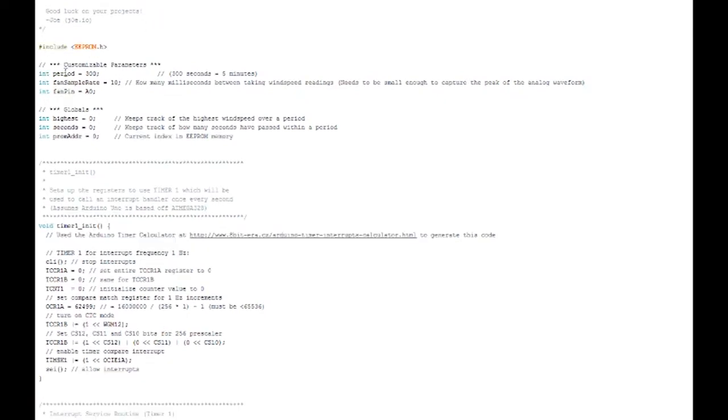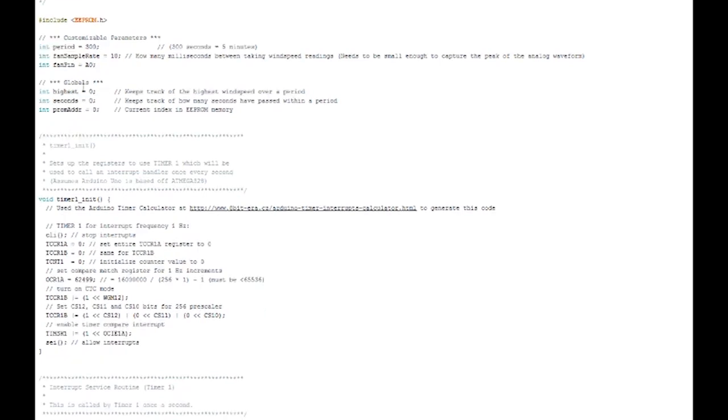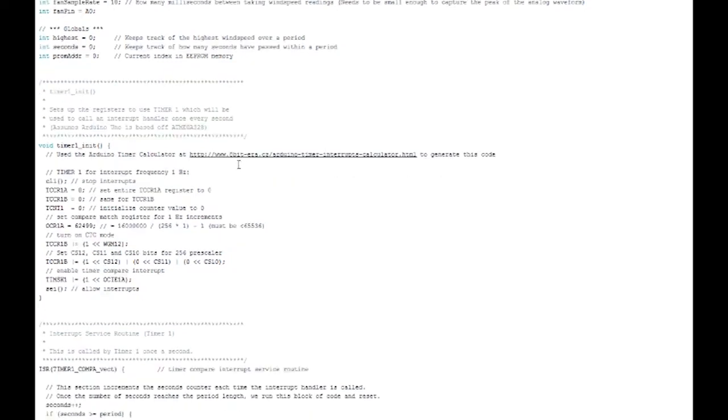And when the interrupt gets called, it takes whatever that highest reading was and stores it in the EEPROM memory. So starting off here, we've got the EEPROM. We include that. We have our customizable parameters. I've got the period time set up for 300 seconds, which equates to five minutes. The fan sample rate is 10. That's about 10 times a second, which seemed to work pretty well on the demonstration we did earlier. And for the fan pin, I'm using analog 0, A0. These are the global variables. This is going to store whatever the highest wind speed was over that period, the seconds or how many seconds that have accumulated within that period. That's how we know when to reset the period. And the PROM address is just our index into the EEPROM array where we're storing. If you don't know what EEPROM is, EEPROM is the permanent storage. So even if the Arduino turns off, it's saved in there and we can retrieve it later.